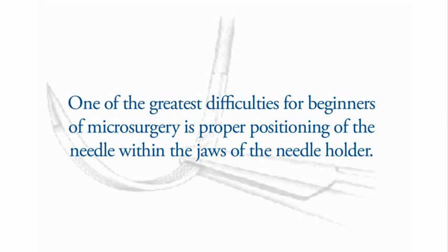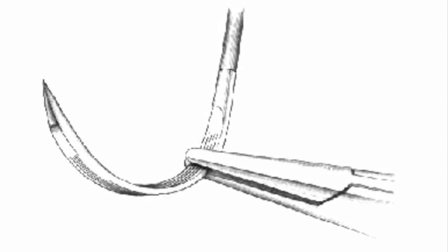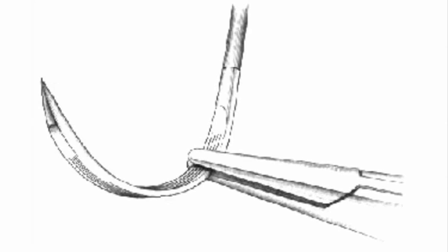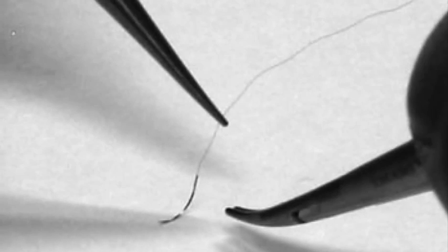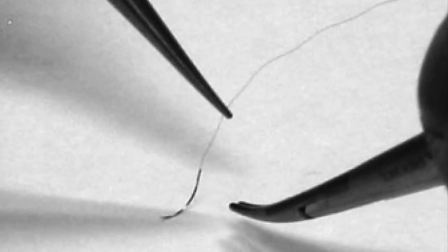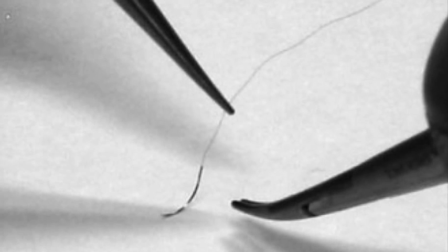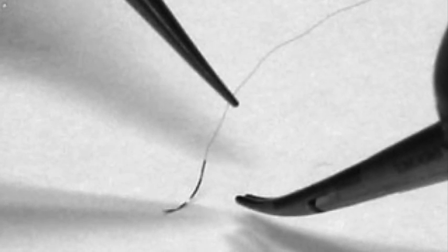One of the greatest difficulties for beginners of microsurgery is proper positioning of the needle within the jaws of the needle holder. Fortunately, you will be using flat needles, whose flat shaft facilitates alignment of the needle within the needle holder. Lift the suture until the needle just touches the surface below. This will facilitate rotating and orienting the needle appropriately within the needle holder along the flat surface of the needle shaft.